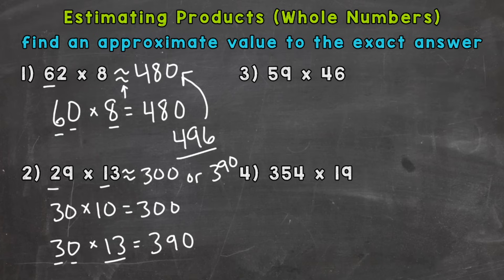Now again, this second estimate here is going to be closer to the exact answer, because I rounded closer to the original problem. There are no written exact rules for estimation, so you can use what's best for you. You can manipulate the problem and round the problem in order to work best for you. Now the exact answer to number two is 377.